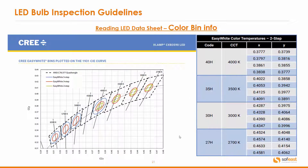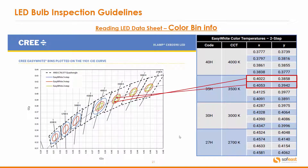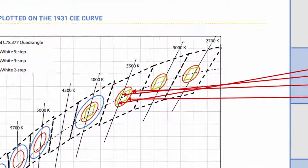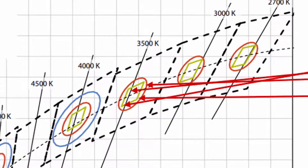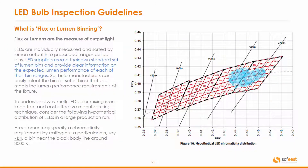So let's have a look at this in detail. The first set of XY coordinates relates to the bottom left-hand corner of that bin. The next set of coordinates is the top left. The next set is the top right. And the final set of XY coordinates shows the fourth point within that bin, the bottom right. So you can now see we have a very specific bin detail for that CCT of 3500K.